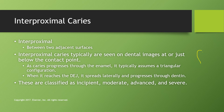Interproximal caries typically appear as a triangular shape as they progress through the enamel. Once they reach the dentinoenamel junction (DEJ), they spread laterally and progress through the dentin. Caries are classified as incipient, moderate, advanced, or severe. Incipient caries are less than halfway through the thickness of the enamel and are the only type that can be successfully arrested with fluoride and prevention — once past incipient, it requires restorative treatment.